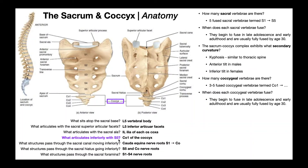What articulates inferiorly with S5? That's going to be CO1 of the coccyx — the first segment of the coccyx. This joint is the sacrococcygeal joint, which we'll go into in more detail in the next video.